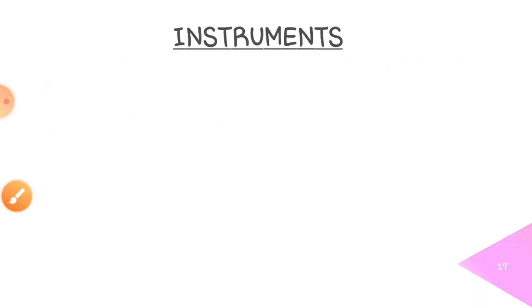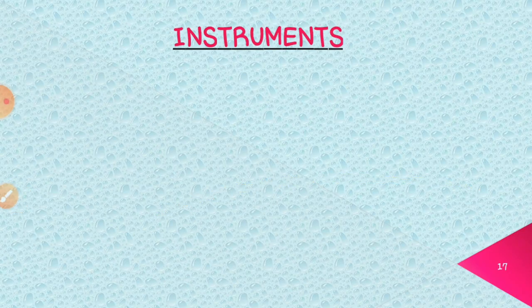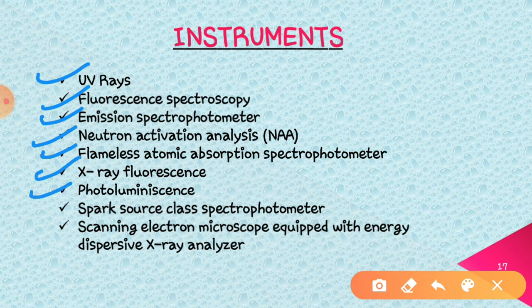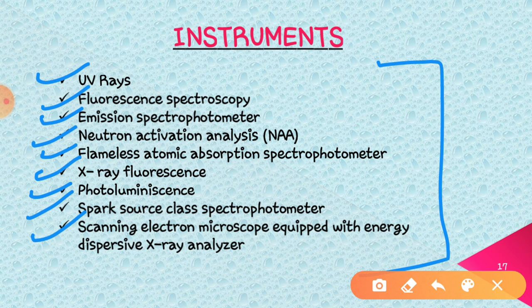Now let us move to the instruments used for the examination of glass evidence. Here are some of the instruments: UV rays, fluorescence spectroscopy, emission spectrophotometer, neutron activation analysis, flameless atomic absorption spectrophotometer, X-ray fluorescence, photoluminescence, spark source mass spectrophotometer, and scanning electron microscope equipped with energy dispersive X-ray analyzer. These are the instruments which are useful for the examination of glass evidence, because with the help of these we can determine the trace elements and trace materials present in glass and compare the standard and question sample very easily.